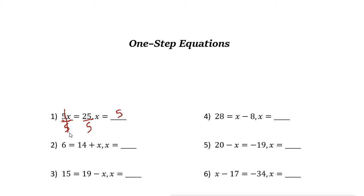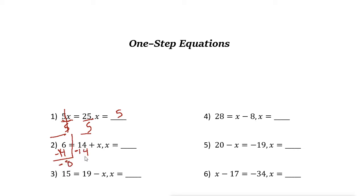Division is the inverse operation of multiplication. The next one: 6 = 14 + x. Here 14 is added to a number, so we need to use the inverse operation of addition, which is subtraction. We subtract 14 from both sides. 6 minus 14 is negative 8, and 14 minus 14 cancels out, so x equals negative 8.